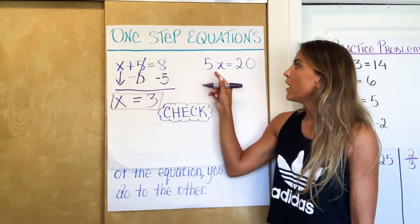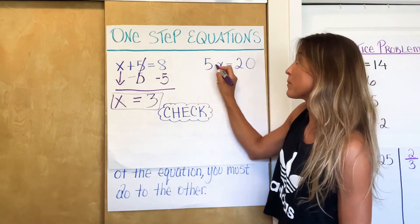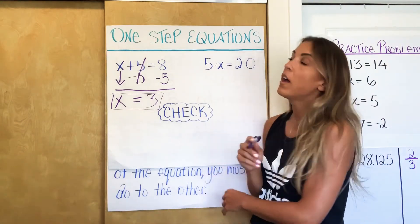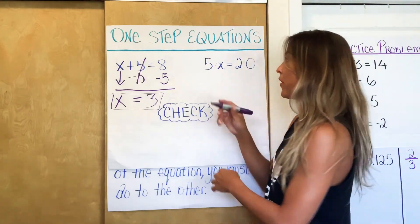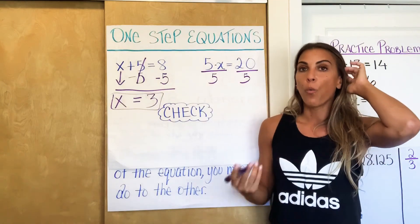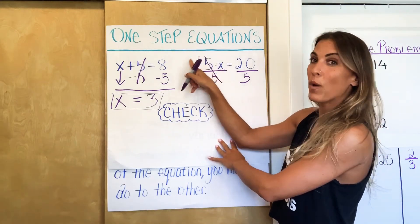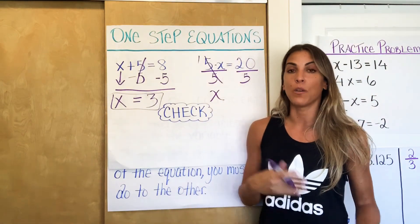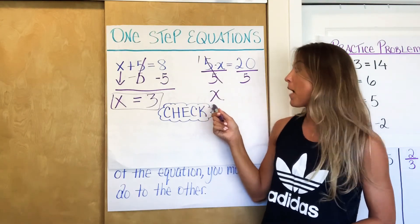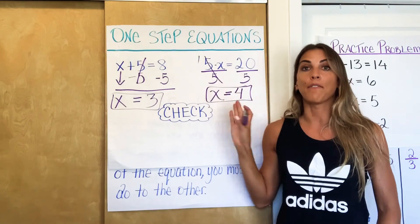Now for 5X equals 20: remember, a number next to a variable means multiplication, so the coefficient is 5. The inverse of multiplication is division. We're going to use a fraction bar to indicate division and divide both sides by five. Five divided by five is one, and one times X is just X — that's our goal. On the right side, 20 divided by five is four. So X equals four — the same answer we found mentally, but now using a strategy.